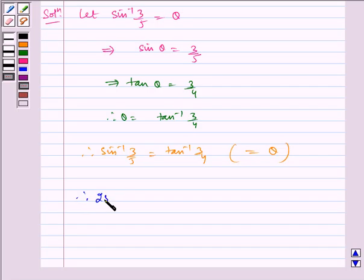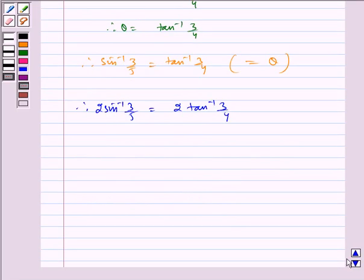Therefore 2 sin inverse 3 by 5 equals 2 tan inverse 3 by 4, which equals tan inverse 2 into 3 by 4 by 1 minus 3 by 4 the whole square.